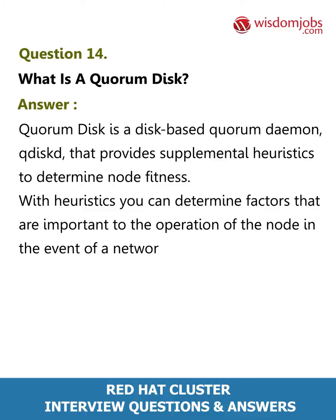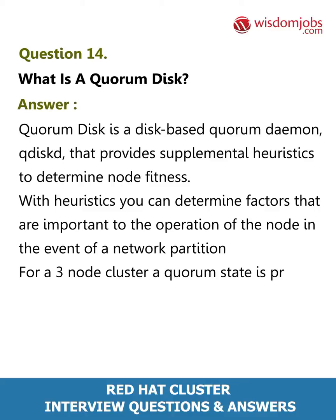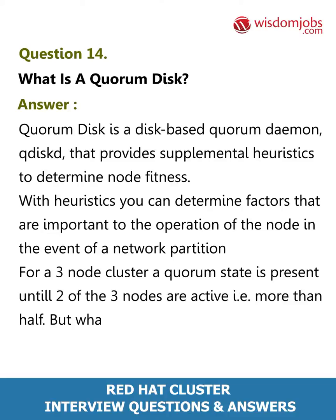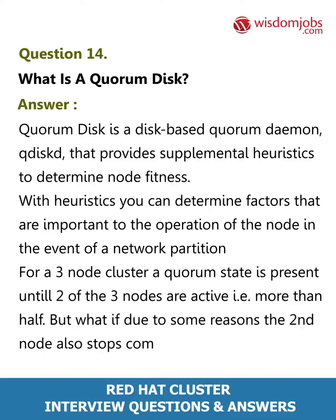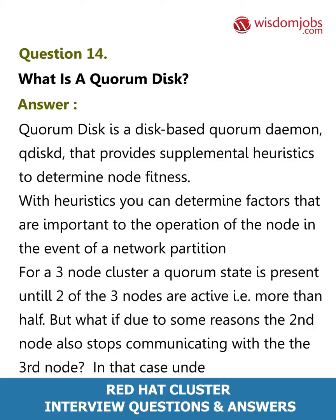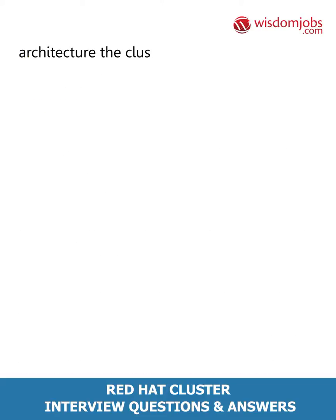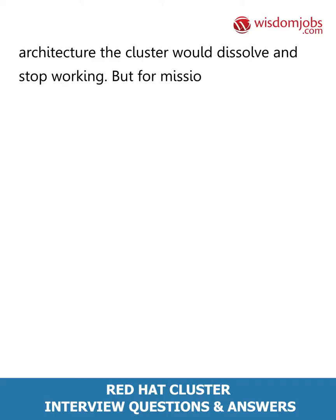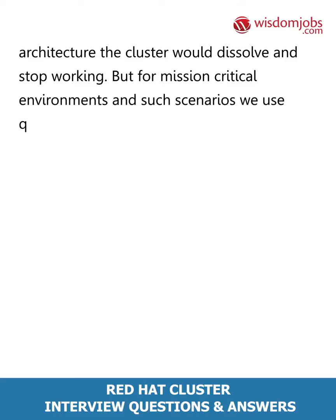In the event of a network partition, for a three-node cluster a quorum state is present until two of the three nodes are active, i.e. more than half. But if due to some reasons the second node also stops communicating with the third node, under a normal architecture the cluster would dissolve and stop working.